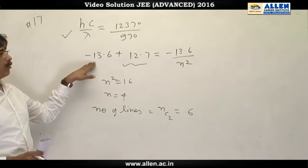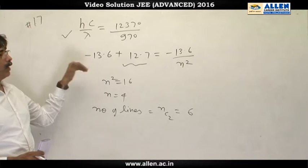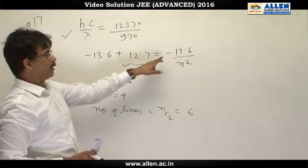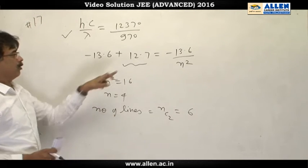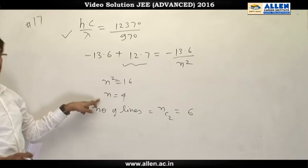Initially hydrogen atom is in ground state. On getting to excited state, its energy is given by minus 13.6 upon N square. On solving, we get N equal to 4.